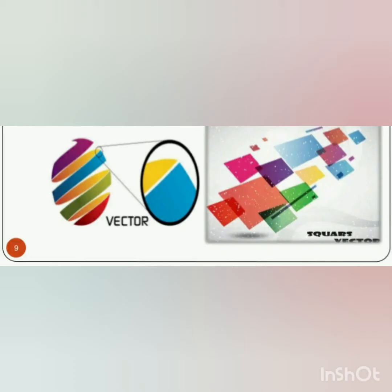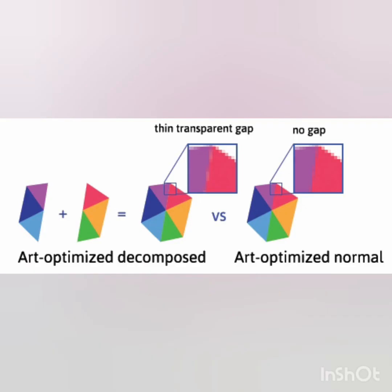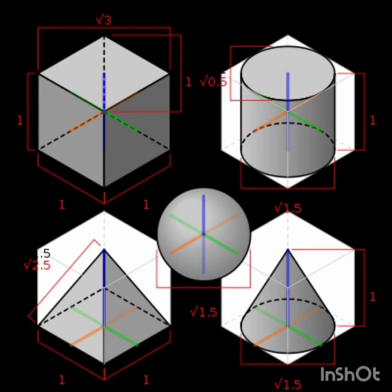Moving forward to the part of how these vectors are generated — that is vector graphics generation. These follow a simple method: the x and y axes are taken as the base reference for the definition of points, and various designs are drawn. Here are some types of vector generation.